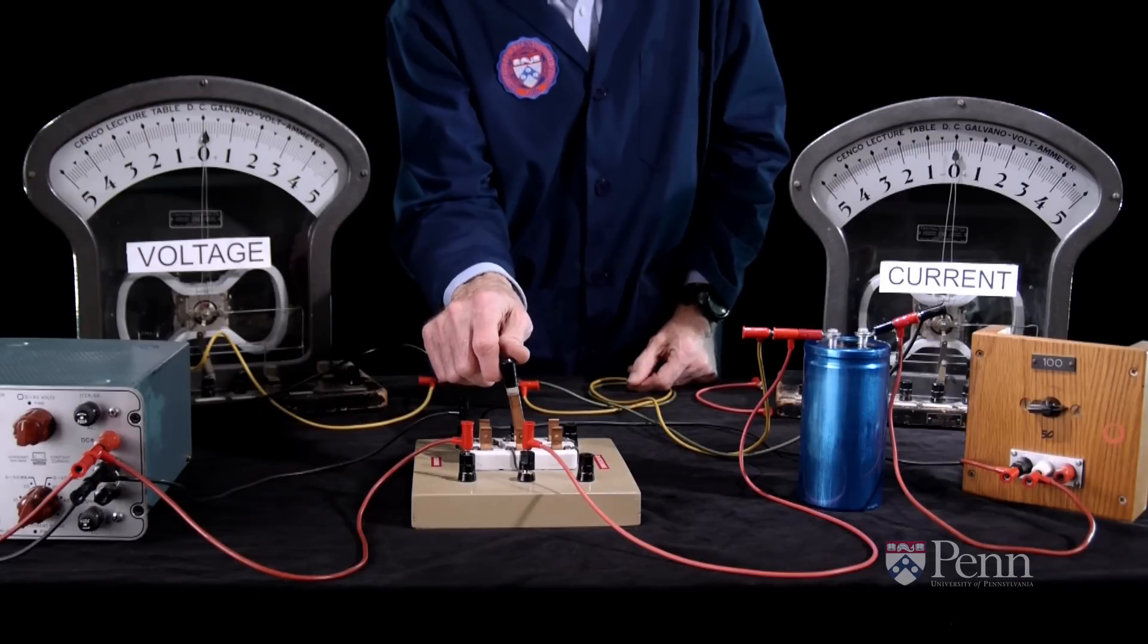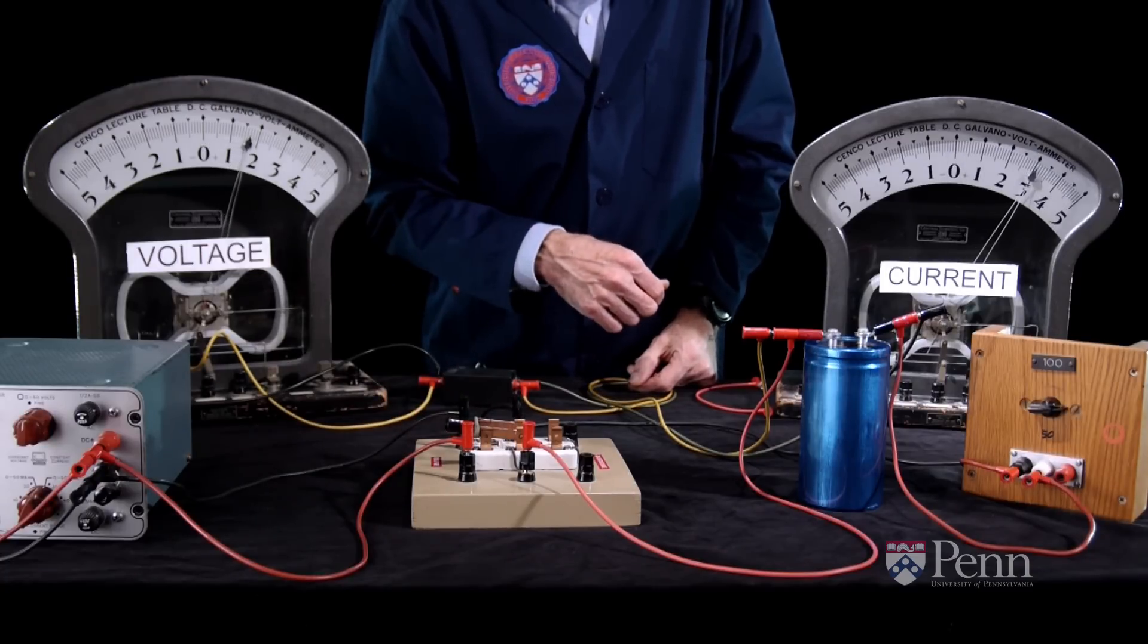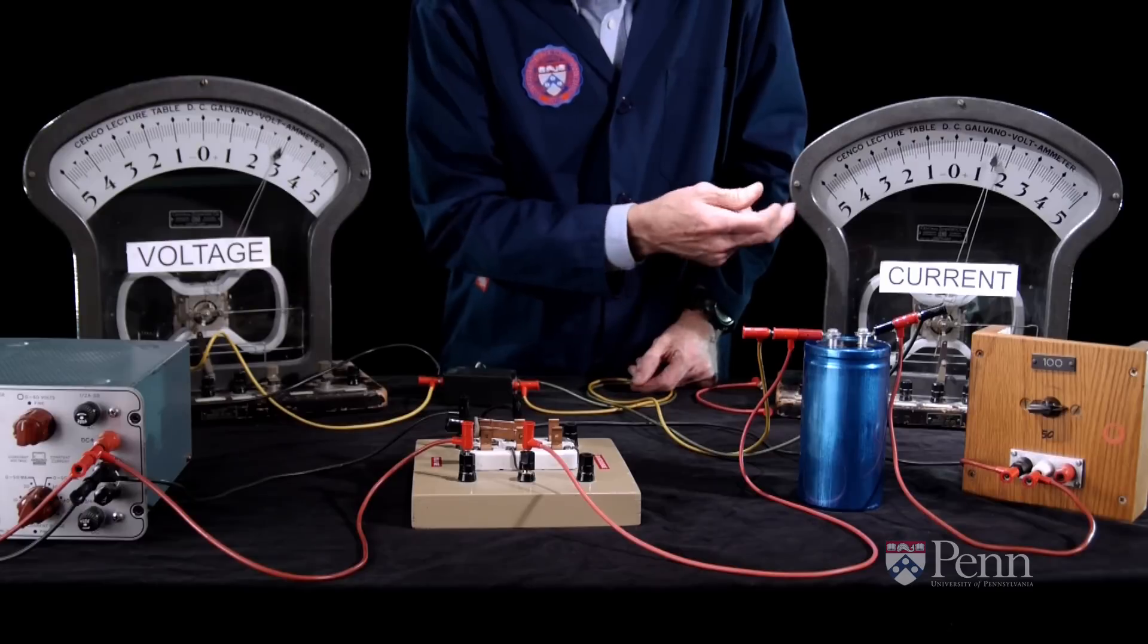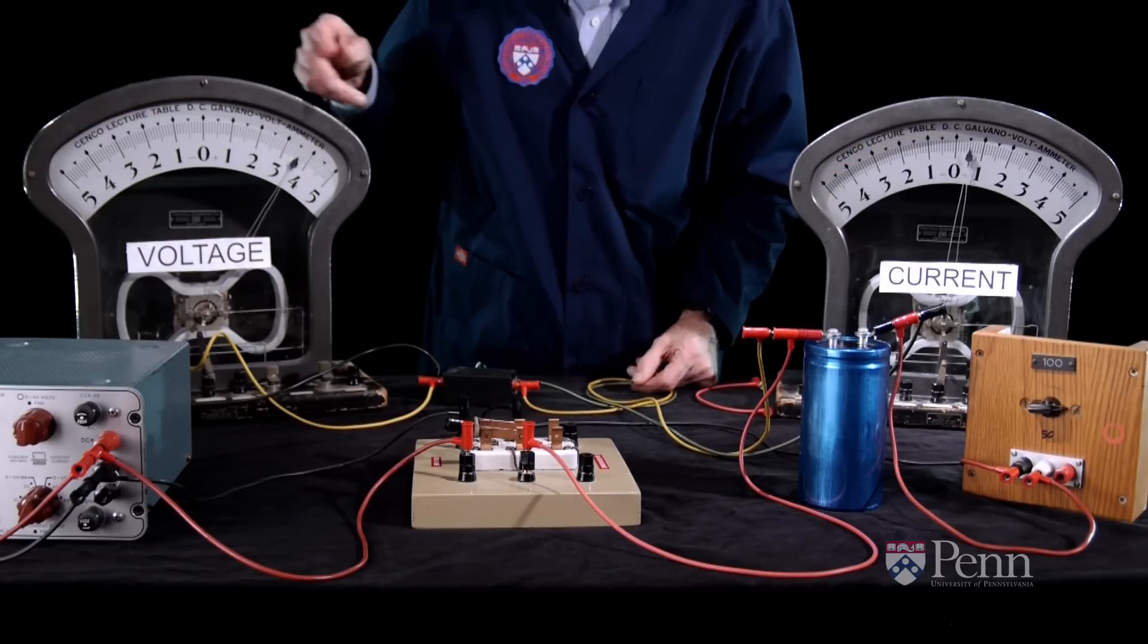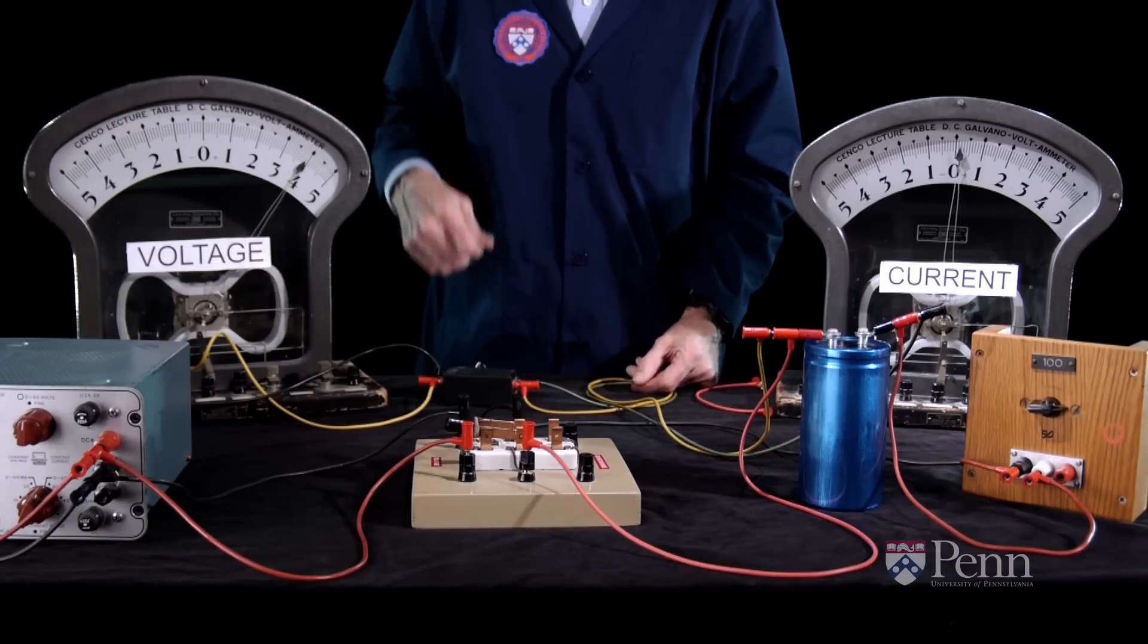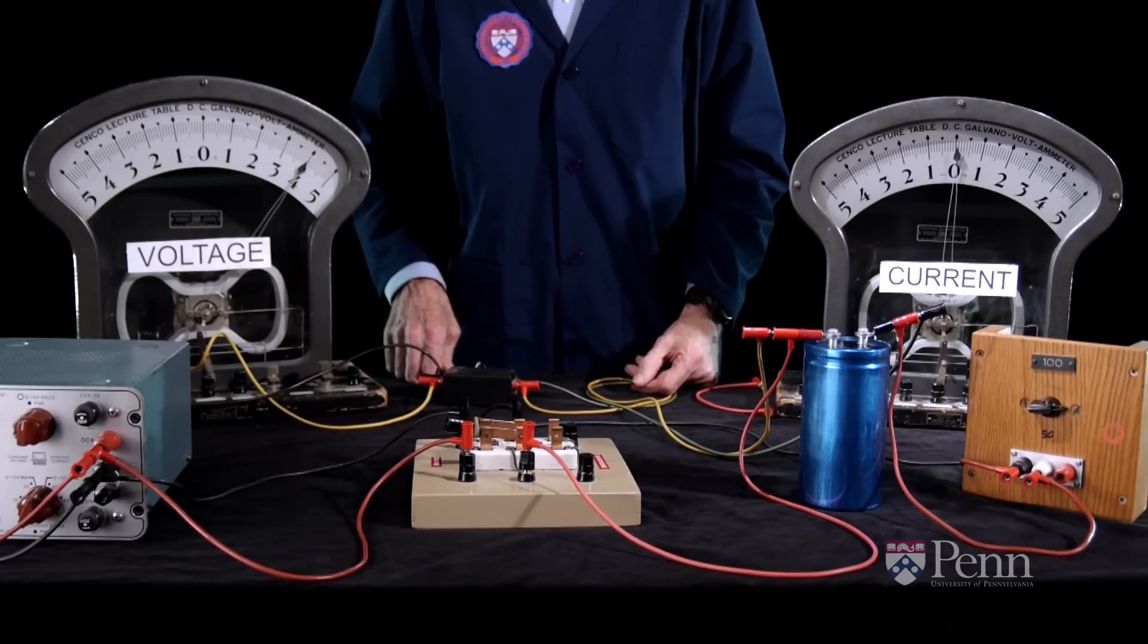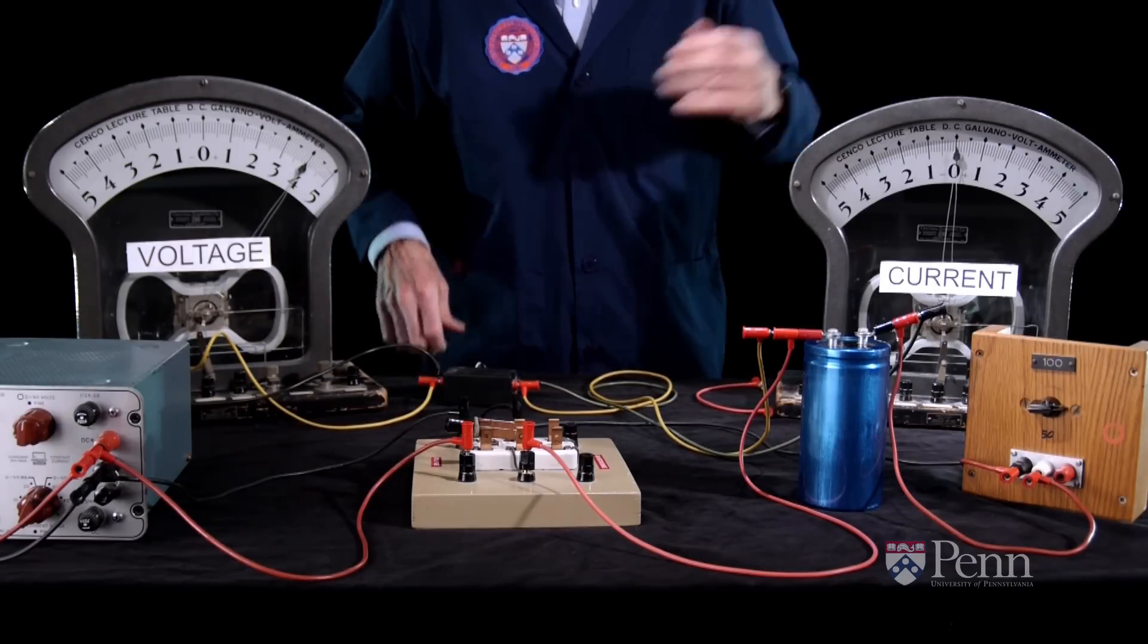What happens is we put a charge on the capacitor, and when that charge builds up, the capacitor pushes back with a potential equal to the battery. So that means the battery is pushing forward with four volts, the capacitor is pushing back with four volts, and we no longer have any current.